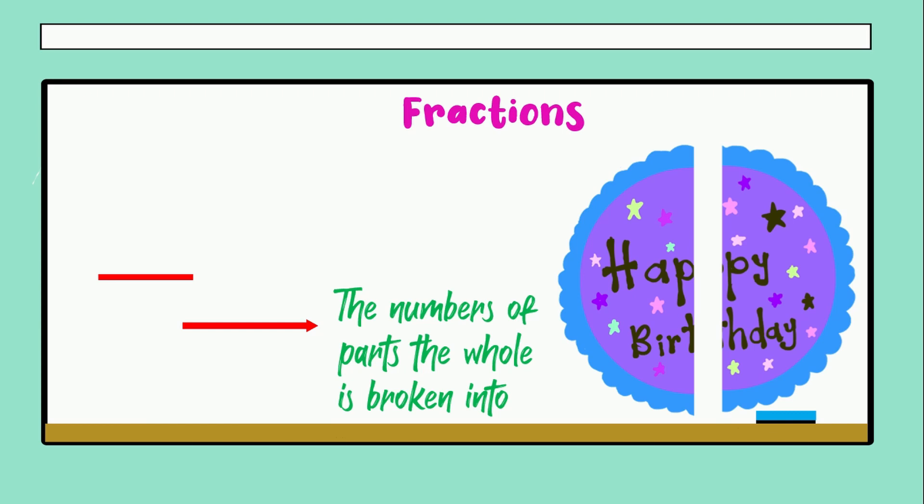So we broke it into one and two. Very good. Now here we have to put that number, the number the whole was broken into. Now here must be the number of parts you have. So as you can see, in this case we have two equal parts. So the number must be two. Two over two, or two halves. Those are the ways to call it.